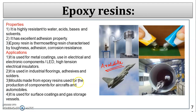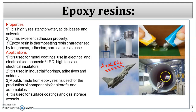Molds made from epoxy resin are used for production of small components for aircraft and automobiles. It is also used for surface coatings and gas storage vessels. The inner coating of gas storage vessels is made from epoxy resin because it is resistant to acids, bases, and solvents. This concludes the properties, synthesis, and applications of Bakelite and epoxy resin.